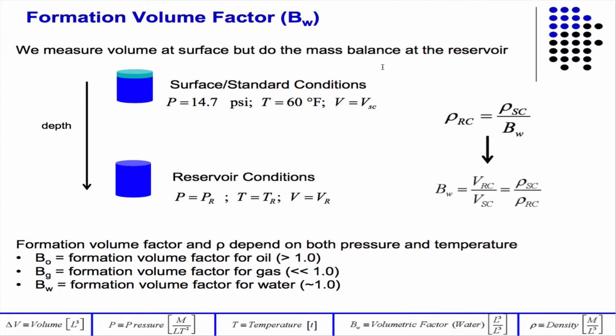And so, it's the ratio of the density in the standard conditions to the ratio of the density in the reservoir conditions. And typically, or not typically, but for oil, that's always going to be greater than one. For gas, it's going to be much less than one. And for water, it's going to be on the order of one. So, a lot of times if we're talking about just single phase flow in water, like a reservoir, an aquifer, you won't see the formation volume factor there because it's just one.